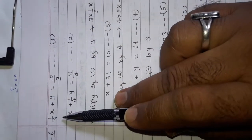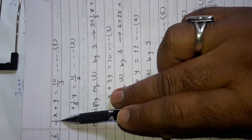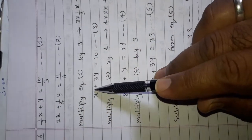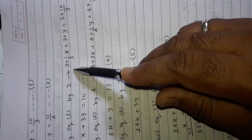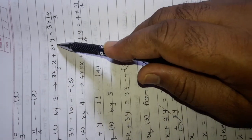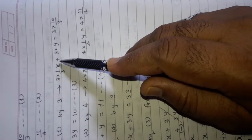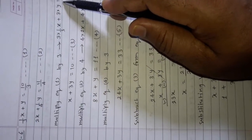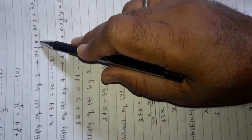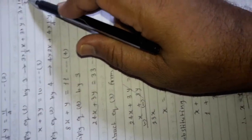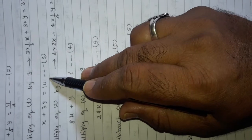Now see equation number 1 — there is 3 in the denominator. So we have to multiply by 3 on both sides in equation number 1. Multiplying equation number 1 by 3: 3 into 1 upon 3x plus 3 into y equals 3 into 10 upon 3. Here 3 and 3 cancel, giving x plus 3y is equal to 10. So equation number 3 is x plus 3y is equal to 10.